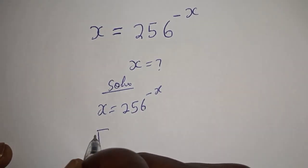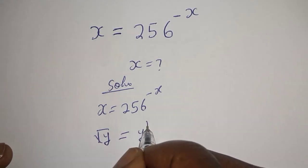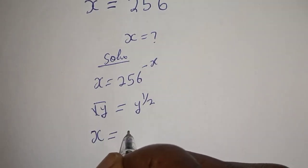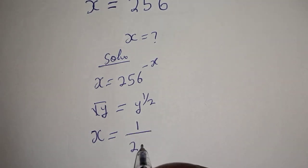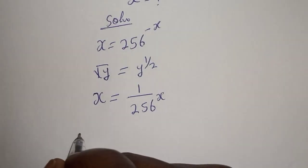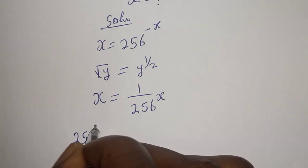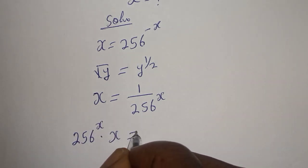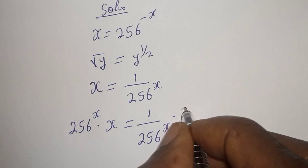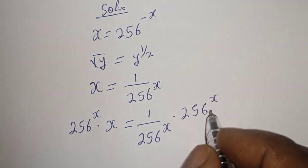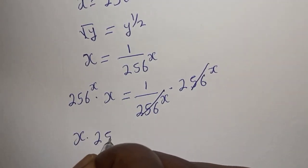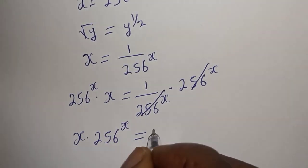If you have the square root of y, this is equal to y raised to the power 1 over 2. So this can be written as S is equal to 1 over 256 raised to the power of S. Let's multiply both sides of this equation by 256 to the power of S. We get S multiplied by 256 to the power of S is equal to 1.